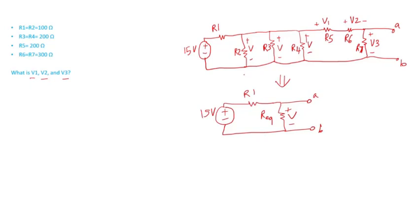One thing I can notice is these points are all at the same potential—there's nothing connected between them. That means the voltage across R2 equals the voltage across R3, which equals the voltage across R4. If I can calculate this voltage, which I call V, I can use it.